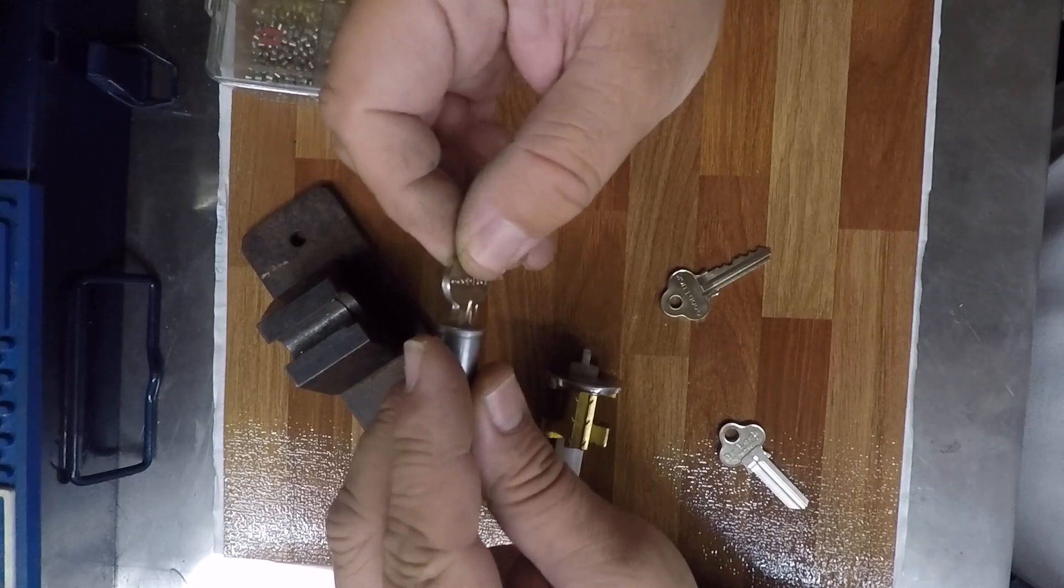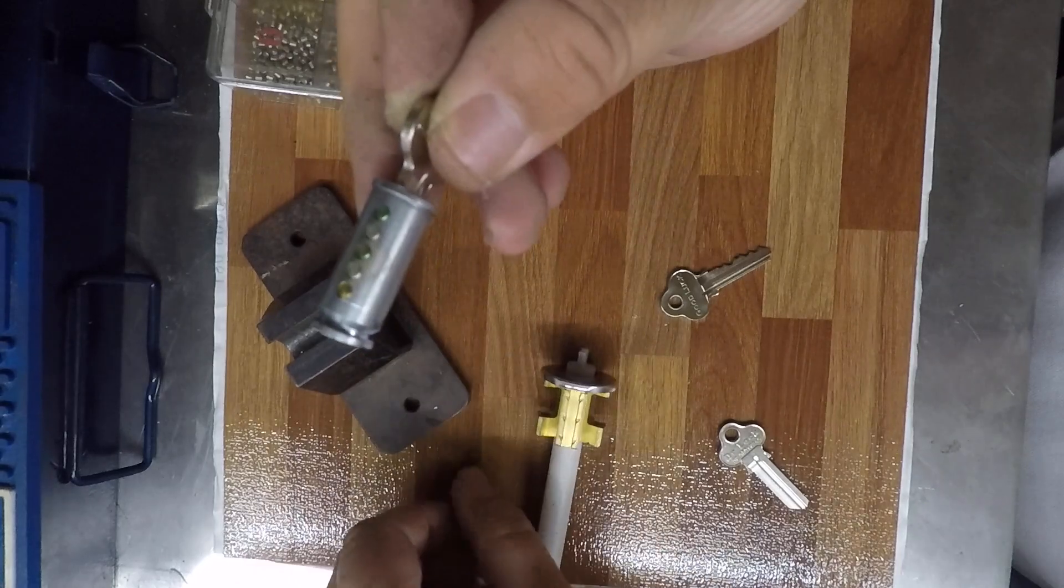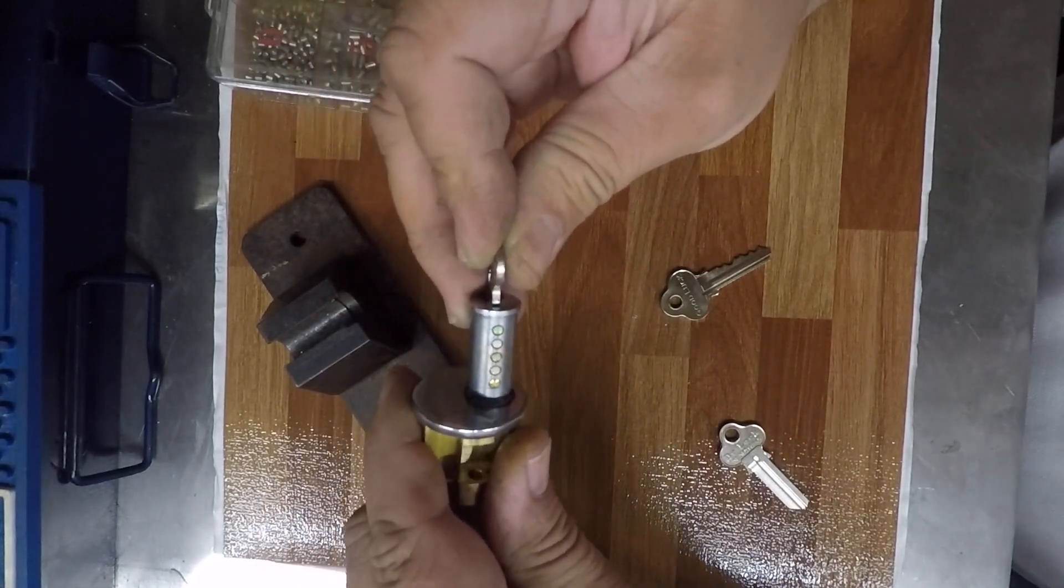Now we have a key that matches this cylinder. Here's our key right here, you can see. Here's our cylinder. The pins are all pinned up. I'm just going to slide it back into the lock.